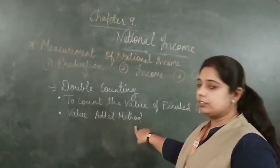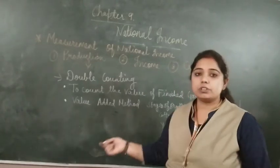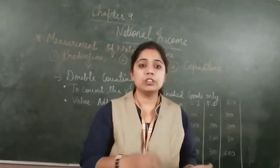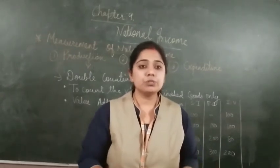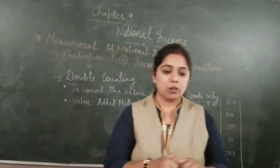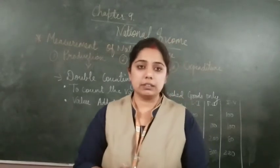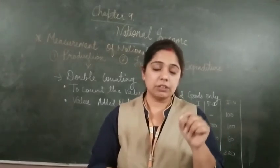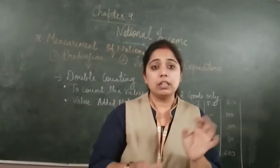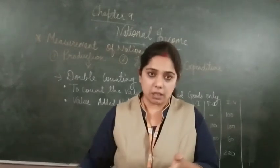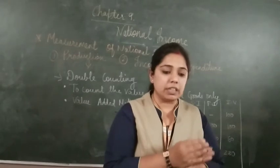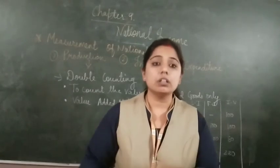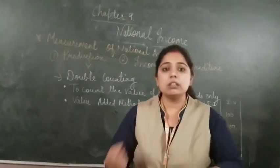The second option is the value added method. In this process, production moves from one stage to another, and at each stage the monetary value increases. The value added at each stage — the output value — is added to the national product. Because of this, double counting does not occur.